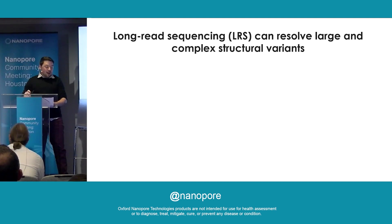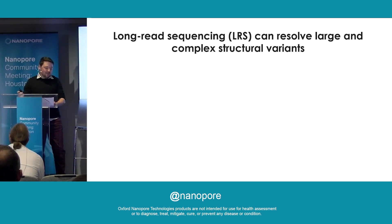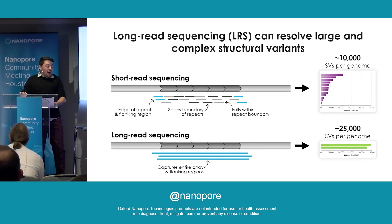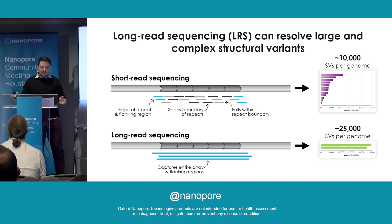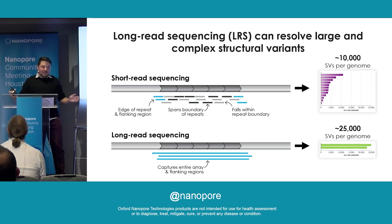I don't need to tout the benefits of long-read sequencing to this audience, but to give a little bit of context for my project: when we're looking at structural variance, short-read sequencing — sequences that are shorter than the length of the structural variant — are going to be unable to fully resolve the structural variant. Long-read sequencing, on the other hand, can span most structural variance in the human genome, and this gives us information on closer to the correct number of structural variants, around 25,000 per genome.